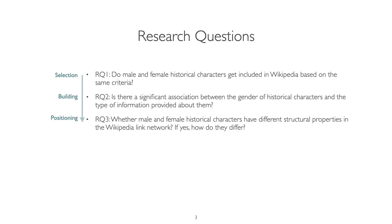We are asking questions like: do female and male historical figures get included in Wikipedia based on the same criteria? Secondly, about content building — we are interested in whether there is an association between the gender and the type of information available. Thirdly, it's about the positioning in the network — we are interested in whether male and female historical characters have different structural properties in the Wikipedia link network.